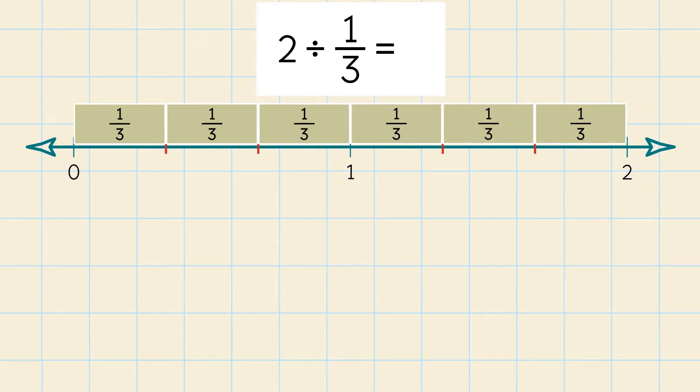Skip count by thirds from 0 to 2 to find 2 divided by 1 third. 1, 2, 3, 4, 5, 6. So the quotient is 6.